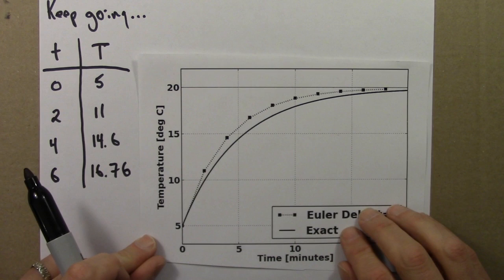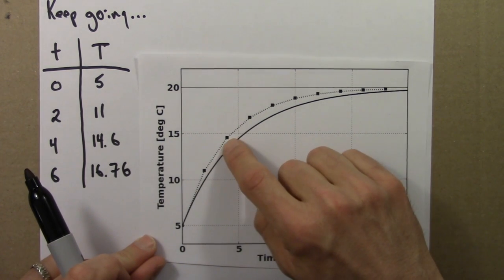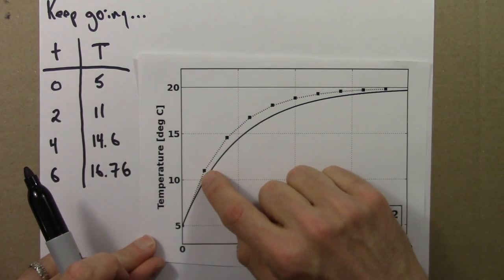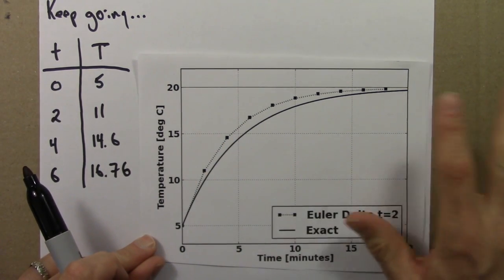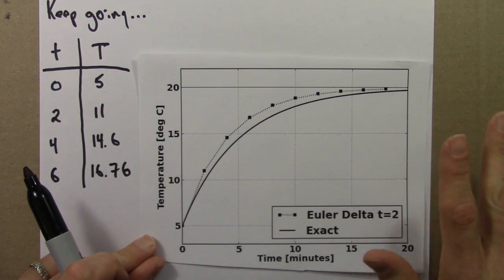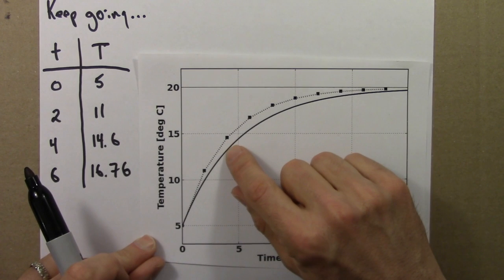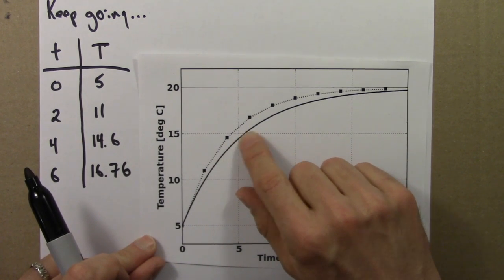And we wouldn't expect a perfect match because we had to do some pretending in order to get this. So, as is often the case, ignoring the problem—remember the problem was that the derivative, the rate of change, wasn't constant—ignoring the problem actually wasn't a great solution because we have these errors here.